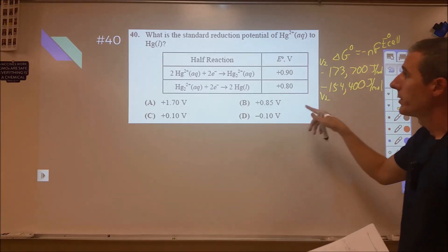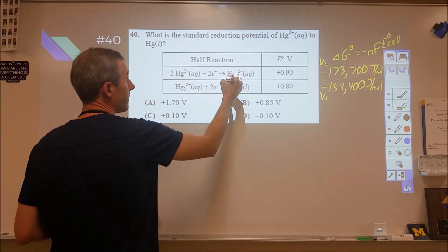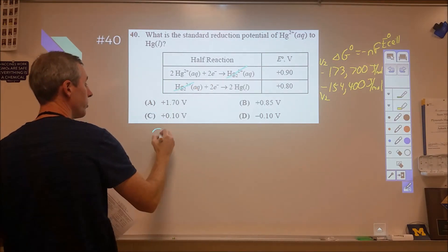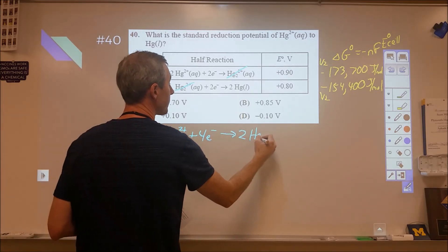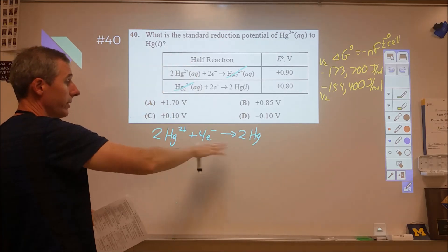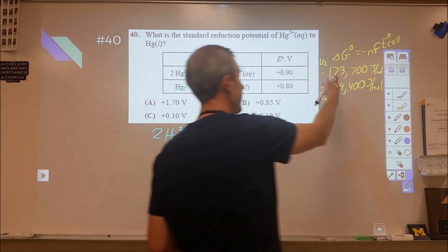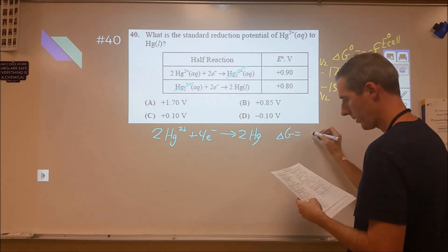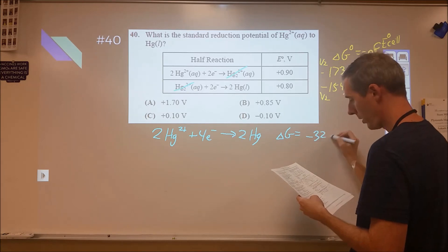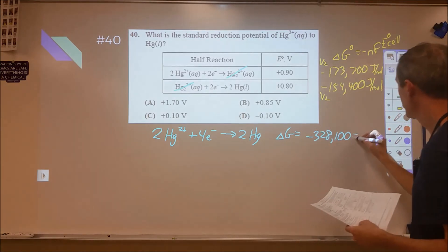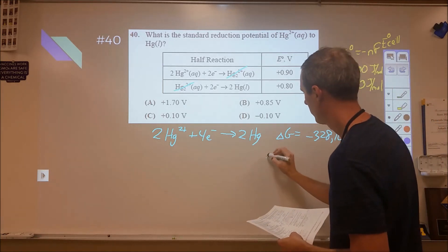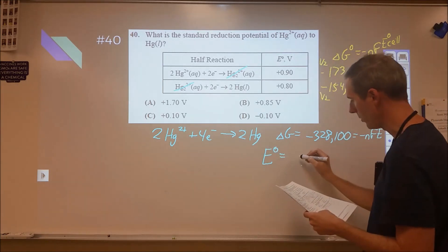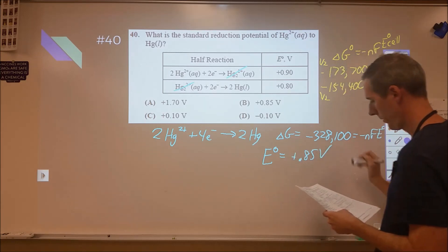So, what works out really nicely here is actually if you just add these two reactions as is, this will cancel, this will cancel, and you'll end up with two mercury two pluses plus four electrons yield two mercury. Which is kind of what we want, except it's doubled. And so, what we can do is we can just add these two together. So, we know that our Gibbs free energy for this is going to be equivalent to negative 328,100. And we know that's equal to negative nFE naught. And so, we can divide this by negative four, divide by 96,500, and we get our voltage is equal to plus 0.85 volts. And, therefore, B is our answer.